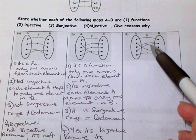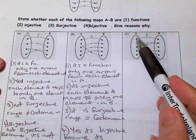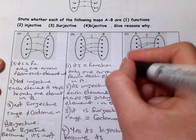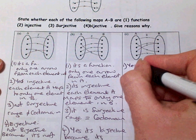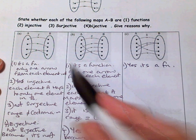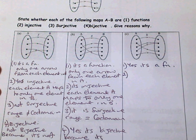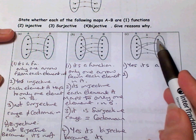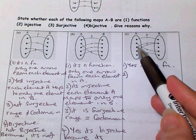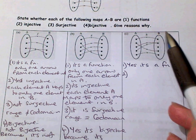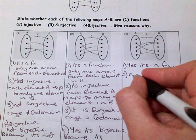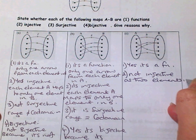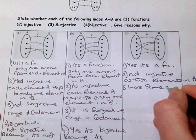And part C. We're asked: is it a function first of all? Following the lines across, there is only one line coming from each of our elements in A. So yes, it's a function — only one line going from each of the elements in A. Number two: is it injective? For each input, is there a unique output? You can see that these two elements share the one output, so it's not a unique output. Therefore it's not injective, as two elements in A share the same output.